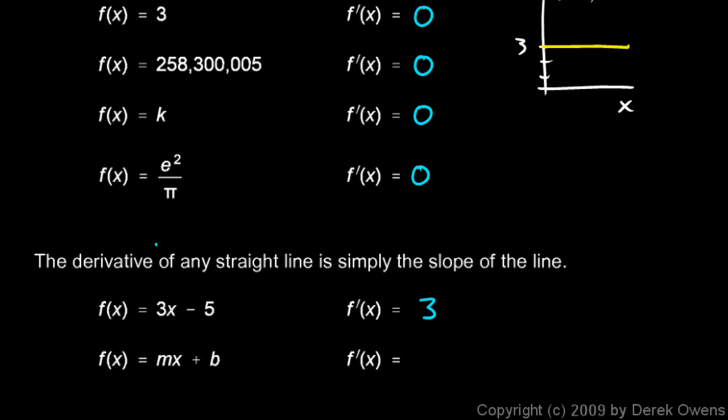This is a line with a slope of 3 and a y-intercept of negative 5. And so the derivative is the slope, it's just 3.